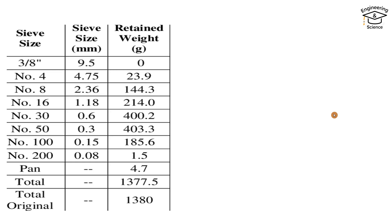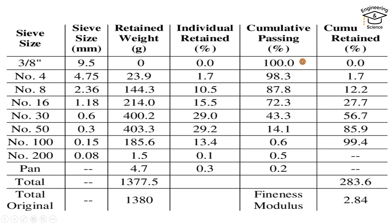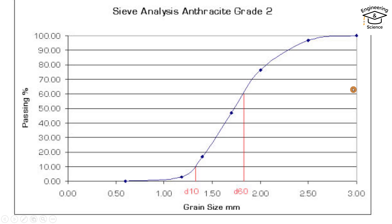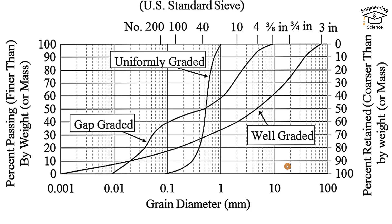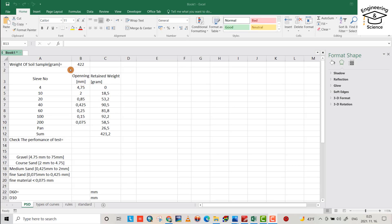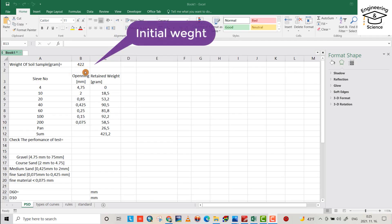Hello everyone. Today I want to show you how to work with sieve analysis data. We have sieve size and retaining weight. We calculate individual retained, cumulative passing, and cumulative retaining, then draw a curve. After that we determine the portion of clay, silt, sand, and gravel, and decide if the soil is uniformly graded, gap graded, or well graded. We have a sample with a weight of 422 grams.